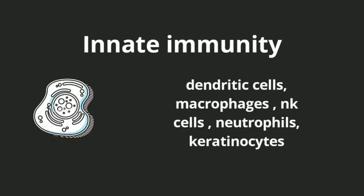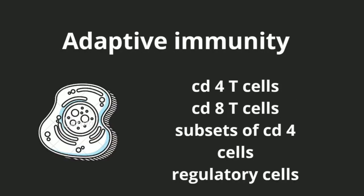Cells of the innate immunity are dendritic cells, macrophages, natural killer cells, neutrophils, and keratinocytes. Cells of the adaptive immunity are CD4-positive T cells and their subsets, which I'll be discussing later in the pathogenesis, CD8-positive cells, and regulatory cells.